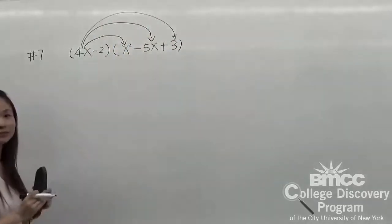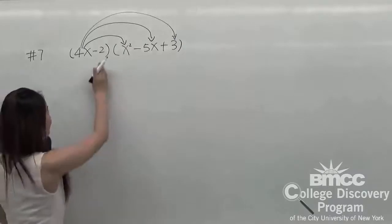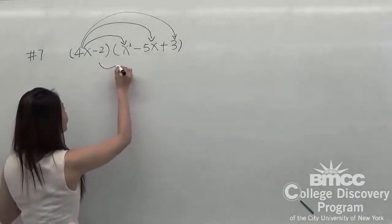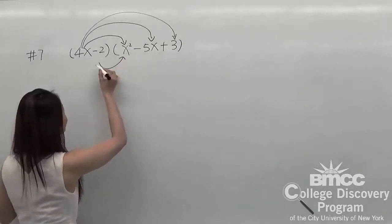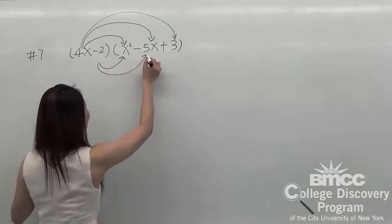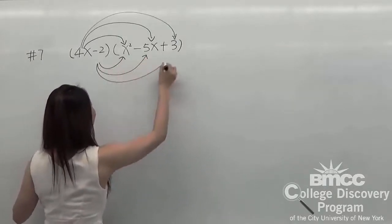We are using the same way to distribute the negative 2 to the second expression: times x squared, times 5x, and times 3.